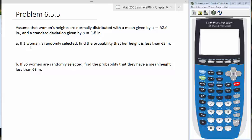First question, if one woman is randomly selected, find the probability that her height is less than 63 inches.